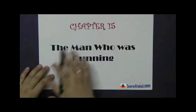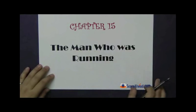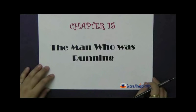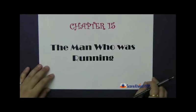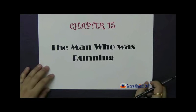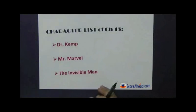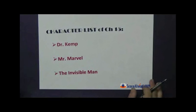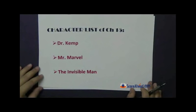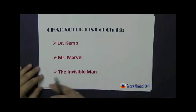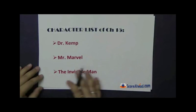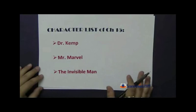He will not move any further, and the rest of the story will revolve here. So in Chapter 15, The Man Who Was Running, we come to this place — the town of Burdock. At the same time we meet another important character, who is Dr. Kemp. The character list of Chapter 15 includes Dr. Kemp, Mr. Marvel, and the invisible man, apart from the other villagers of course.